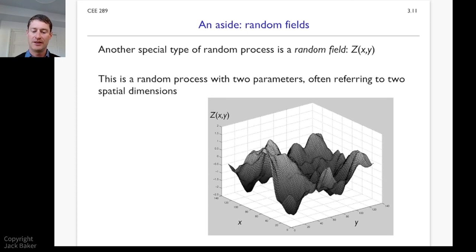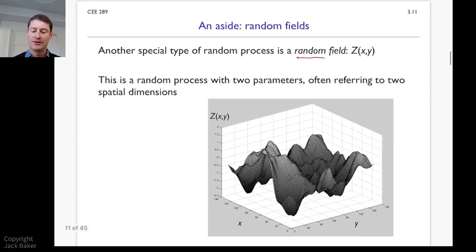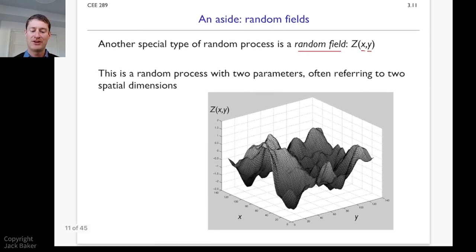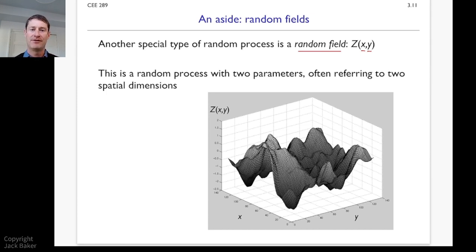One extension is what we'll call a random field. A random field is a process that has two parameters rather than just time t. Oftentimes this is spatial dimensions — for example, the varying capacity of soil at a site I'm looking to build on, as a function of the xy coordinates of the surface of the soil. I could even go in three dimensions as a function of depth as well for soil characterization.